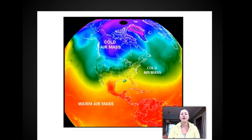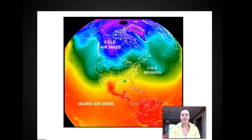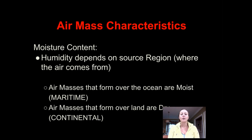Here's a picture of our Earth, and you can see that in different regions we may get different air masses. Up closer to the poles we'll have a cold air mass, and towards the equator we'll have a warm air mass. Now, the first air mass characteristic we're going to look at is moisture content — it tells us if there's water vapor in the air. If it forms over an ocean, it's going to be a wet or moist air mass.